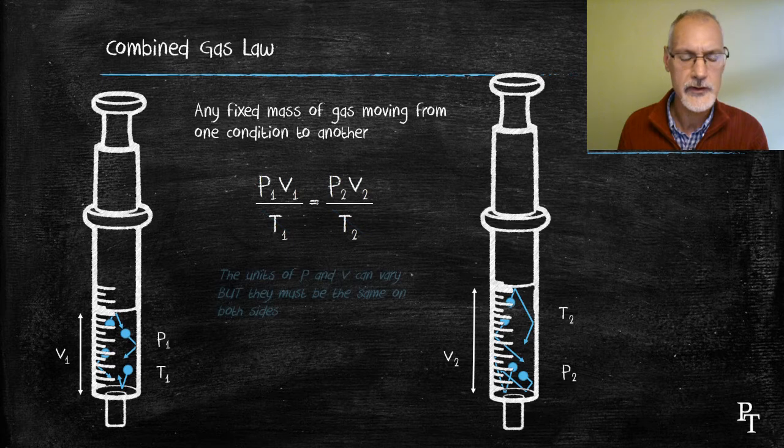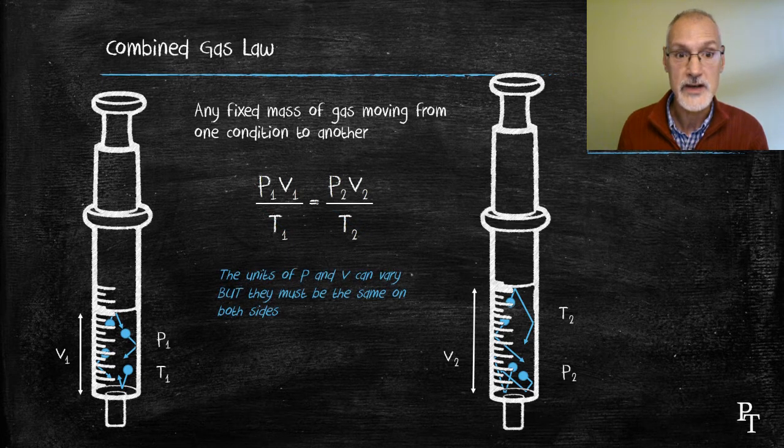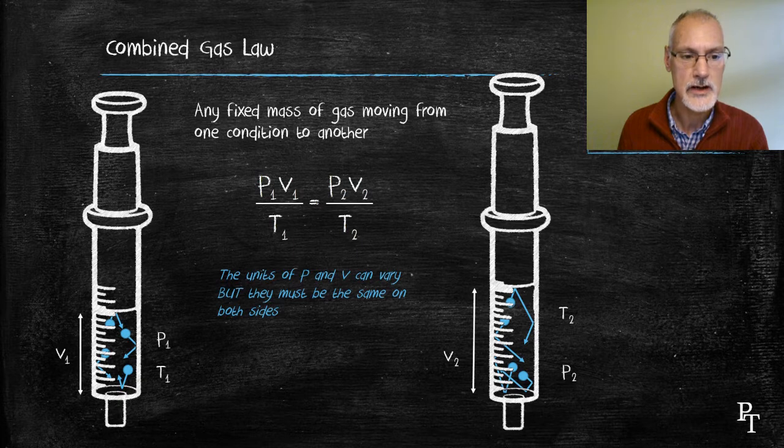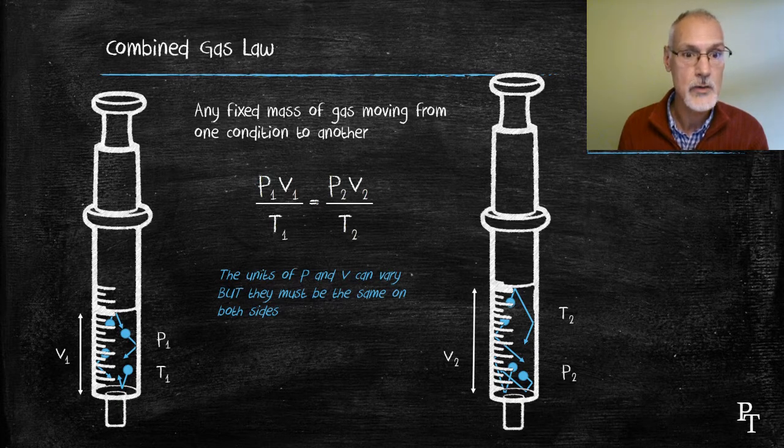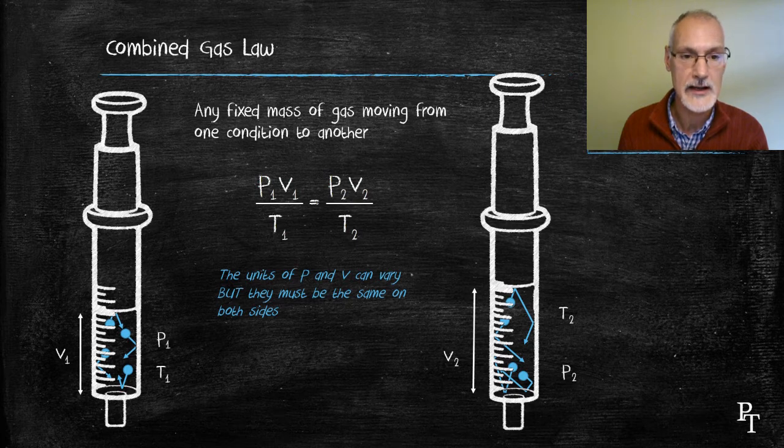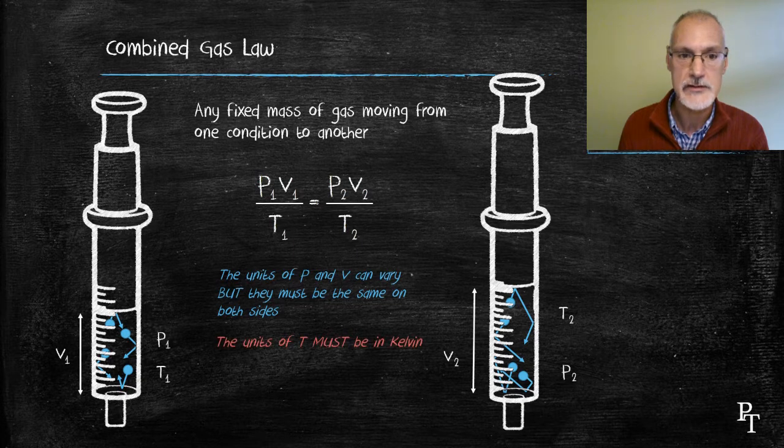A couple little notes about the use of this particular relationship. First of all, the units of pressure and volume can vary, meaning you could measure the pressure in pascals or kilopascals, even some old British units like pounds per square inch. But the only hitch is they must both be measured in the same unit. The pressure on each side must have the same unit. And likewise, the volumes could be measured in any unit, but they must be the same on both sides. And finally, temperature. This relationship only works if my temperature has been converted to the Kelvin scale.